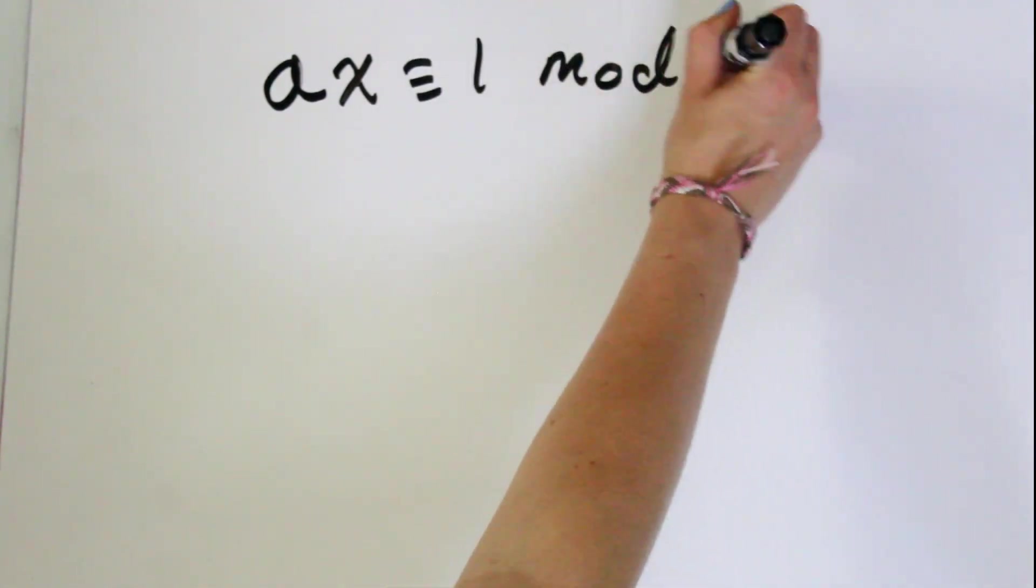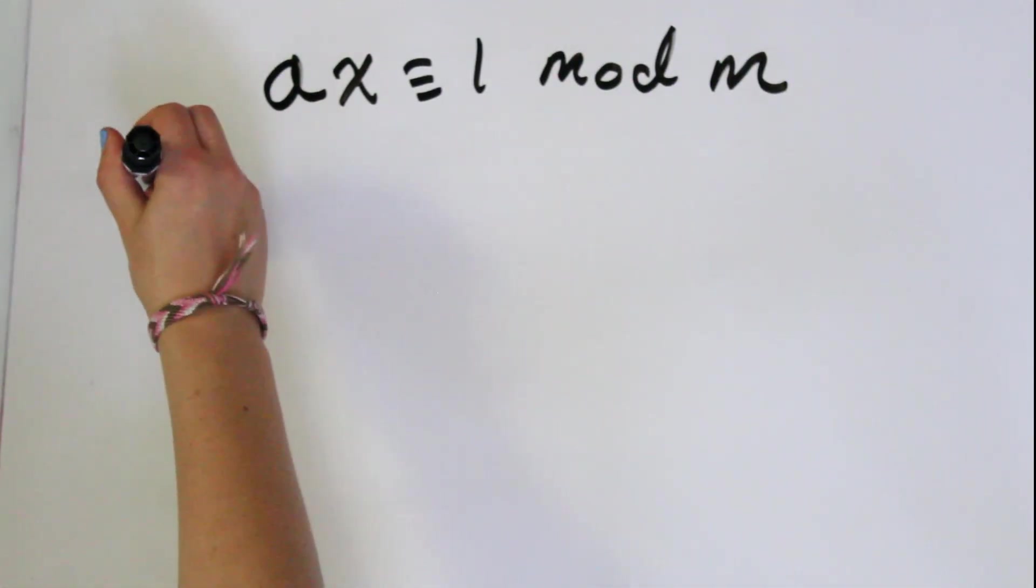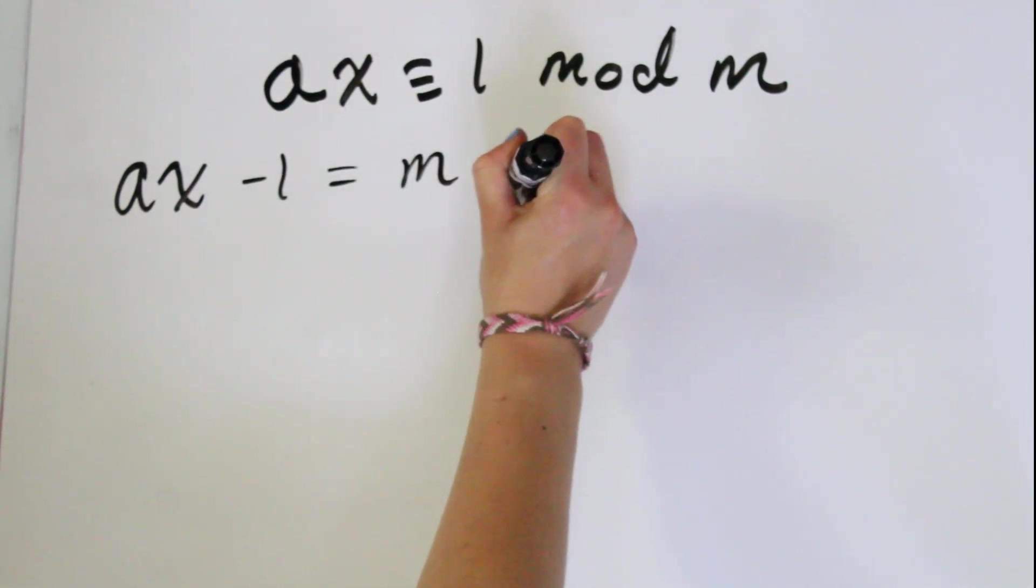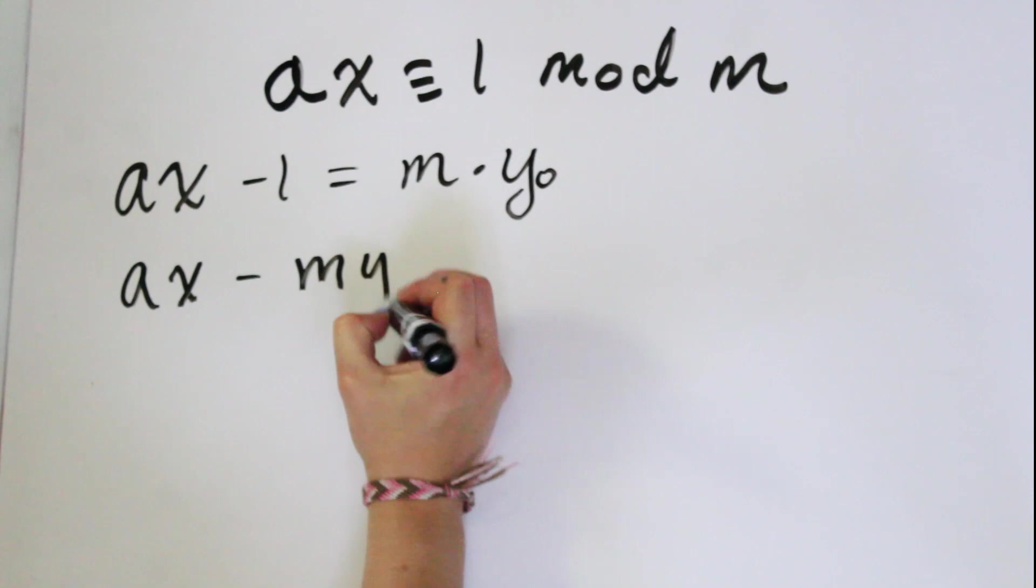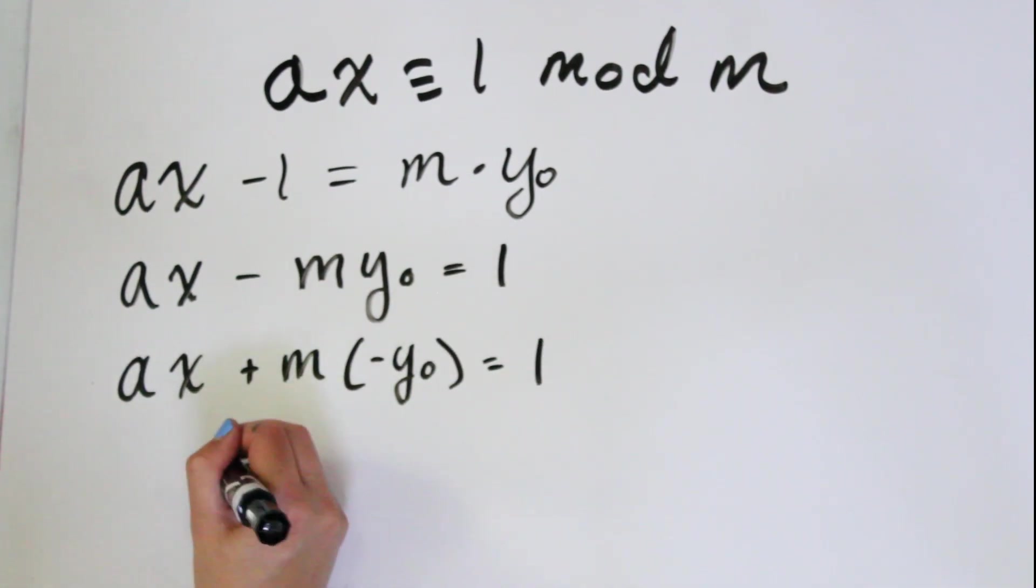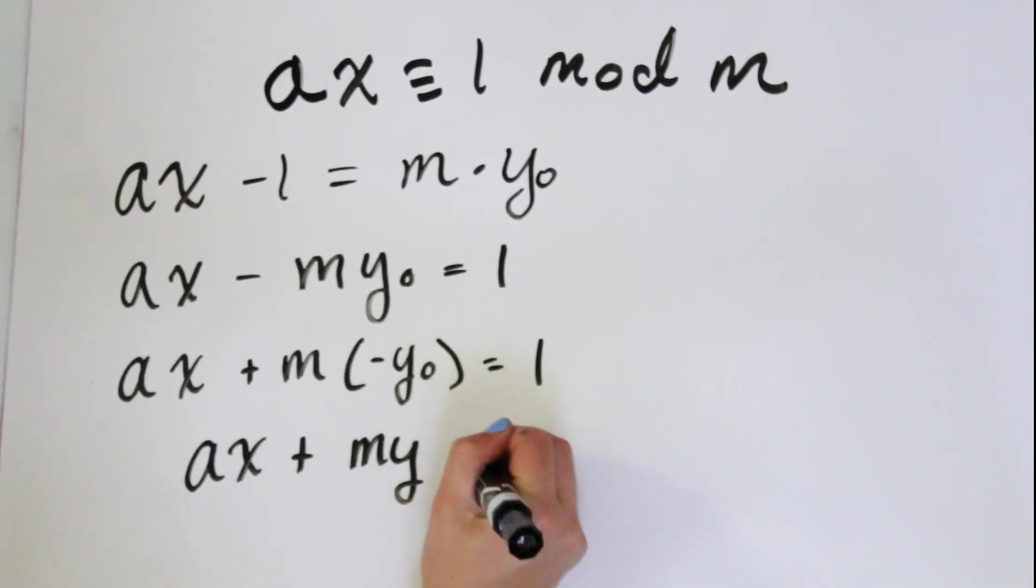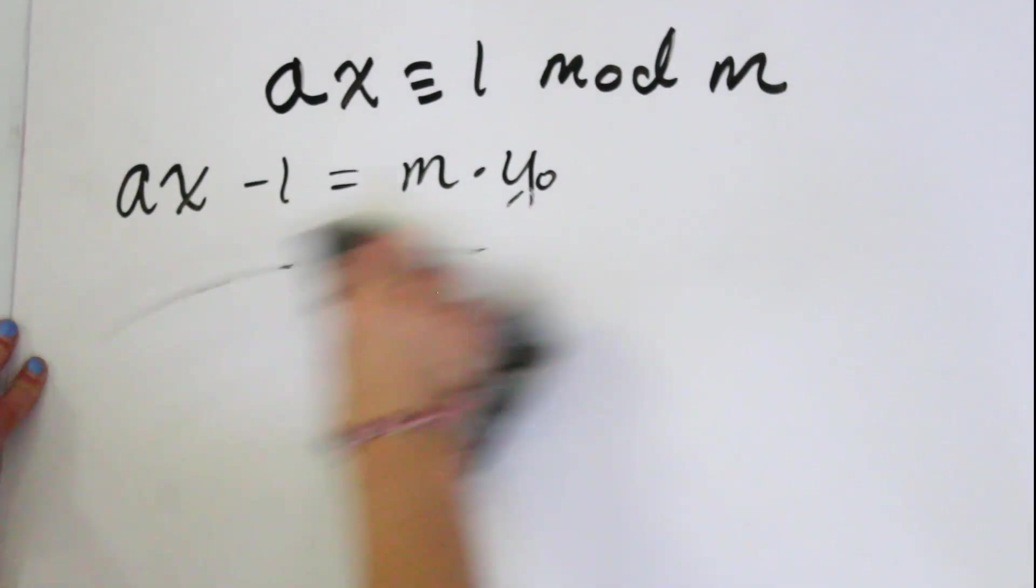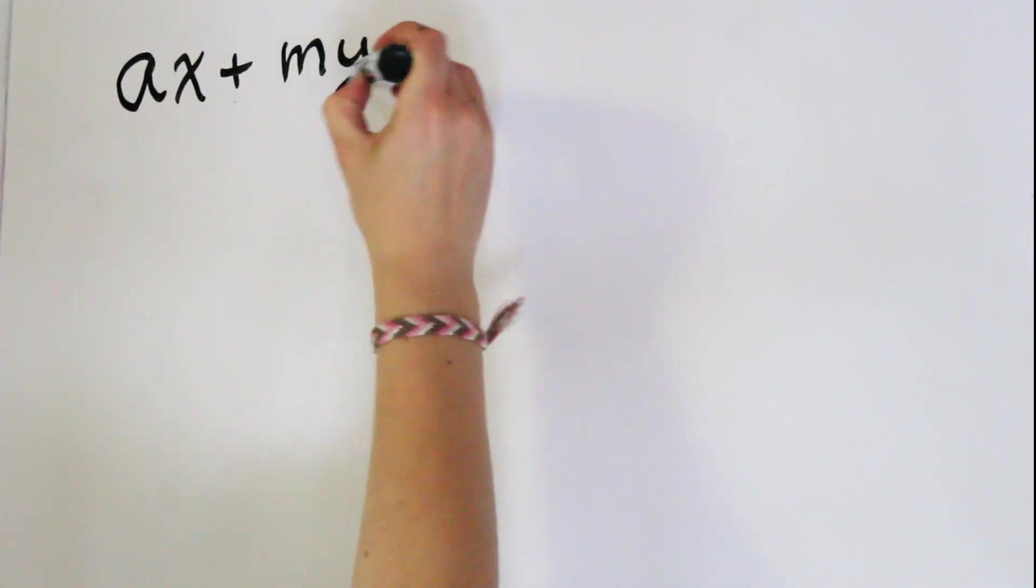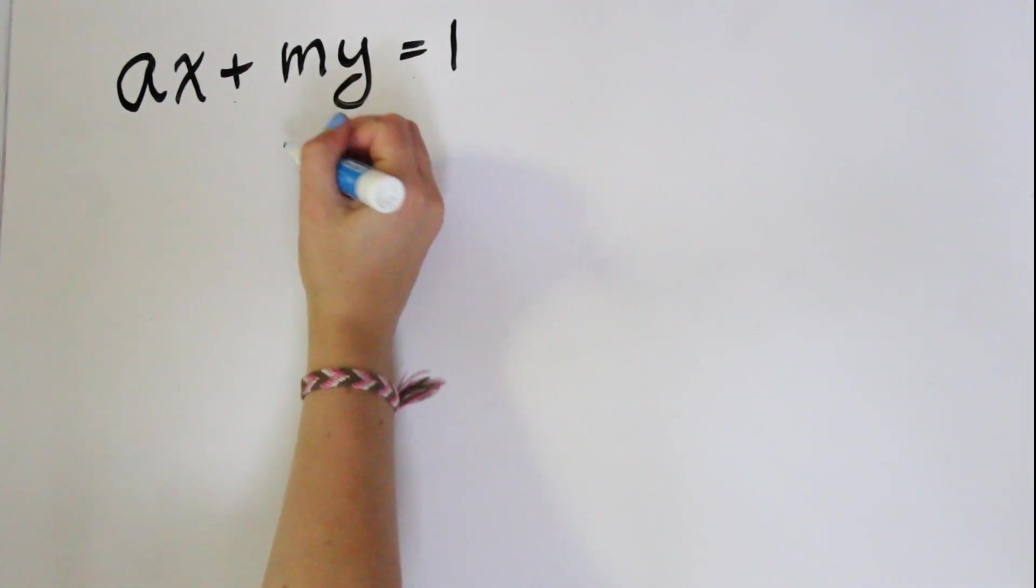Let's look at the congruence Ax is congruent to 1 mod m. We know that Ax - 1 is then equal to m times some integer y₀. So Ax - m × y₀ = 1. And we can set negative y₀ equal to another integer y. So Ax + my = 1. We're assuming that this only has integer inputs. So it's what we call a linear Diophantine equation.